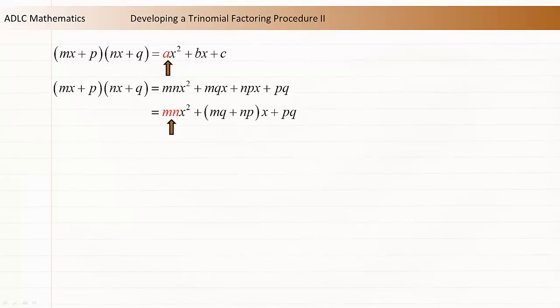Again, there is a pattern that can be used to factor a trinomial, where mn is the a value, mq plus np is the b value, and pq is the c value.